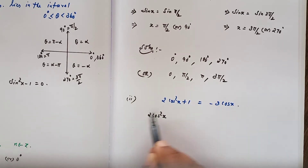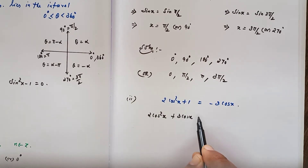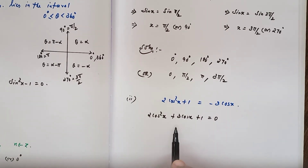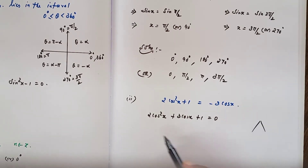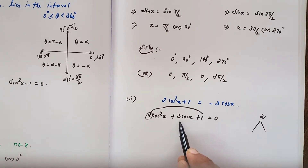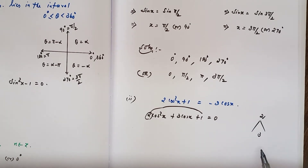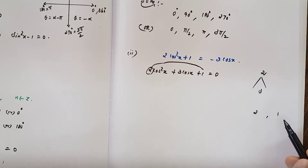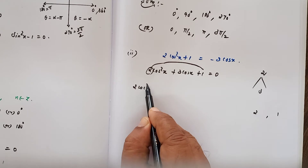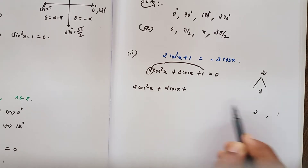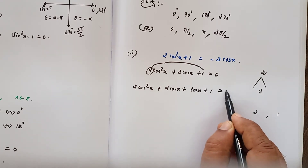Subdivision 2: 2cos²x plus 3cosx plus 1 equals 0. This is a quadratic equation in terms of cos x. Splitting the middle term: the coefficient of cos²x is 2, multiplied with the constant 1 gives 2, and the coefficient of cos x is 3. Product 2, sum 3 — the two numbers are 2 and 1. So: 2cos²x plus 2cosx plus 1·cosx plus 1 equals 0.